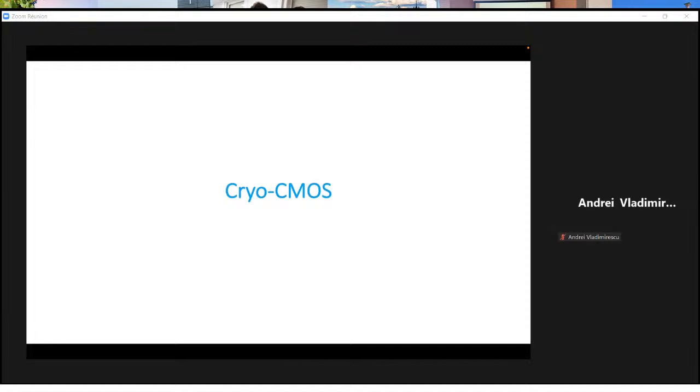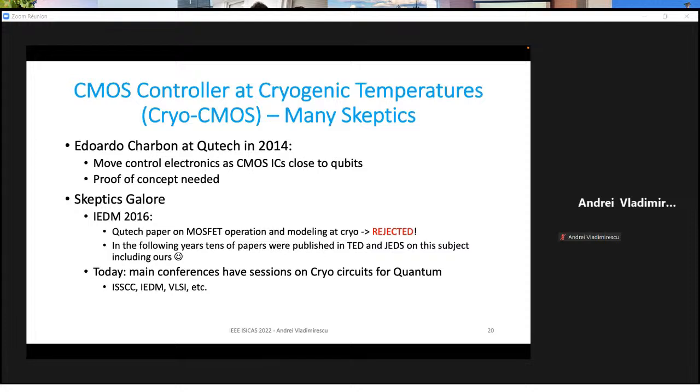The better solution is called cryogenic CMOS. And this is the idea to move the electronics as an integrated circuit next to the quantum processor, next to the quantum chip. My colleague and friend from TU Delft got a bunch of us together because he decided that we need to move, which we all agreed on, to move the control electronics as a CMOS IC next to the qubits. Now, we need to prove that it actually works. It's a nice idea. But will a transistor behave at four degree Kelvin or one degree Kelvin the same as it does at 300 K? So that was not clear at that time.